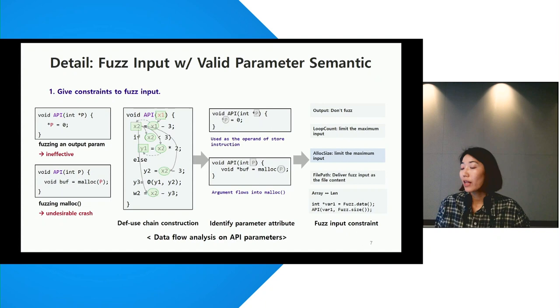In the example on the left, fuzzing on output parameter is unnecessary, and providing the large values to the memory allocation can cause out-of-memory errors. We classified five such attributes of parameters that can cause undesirable crashes or ineffective fuzzing based on our observations of fuzzing results.